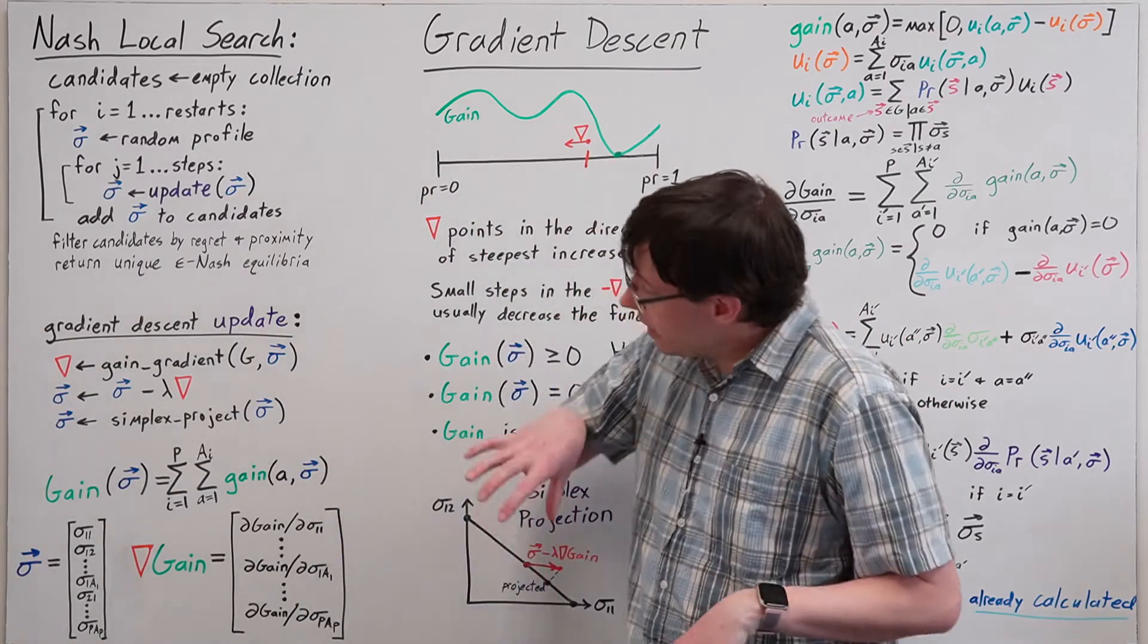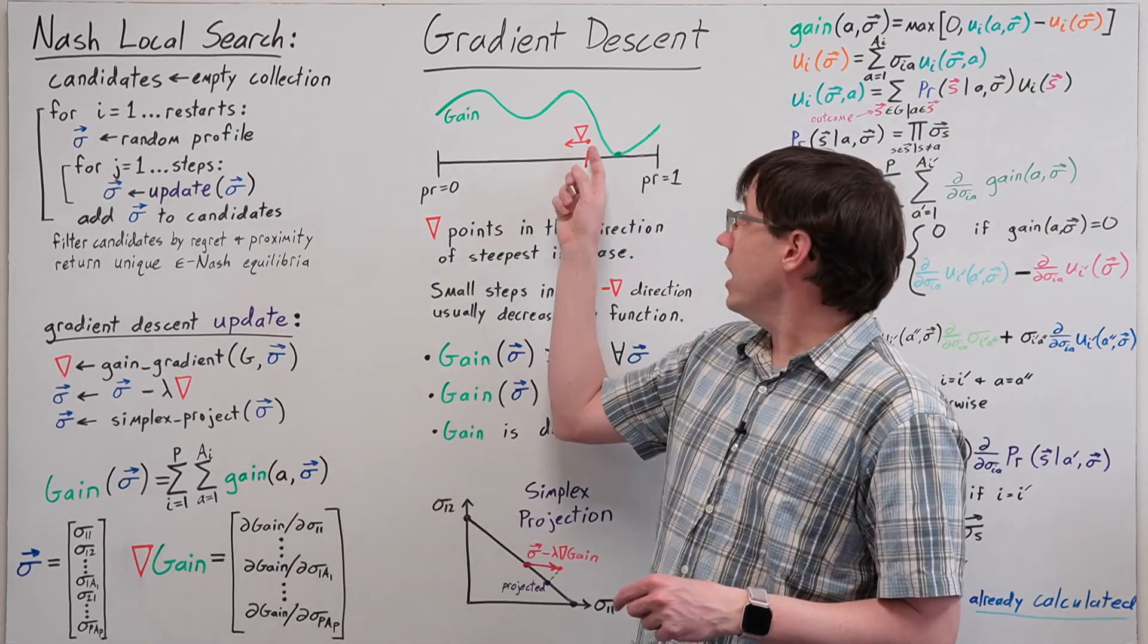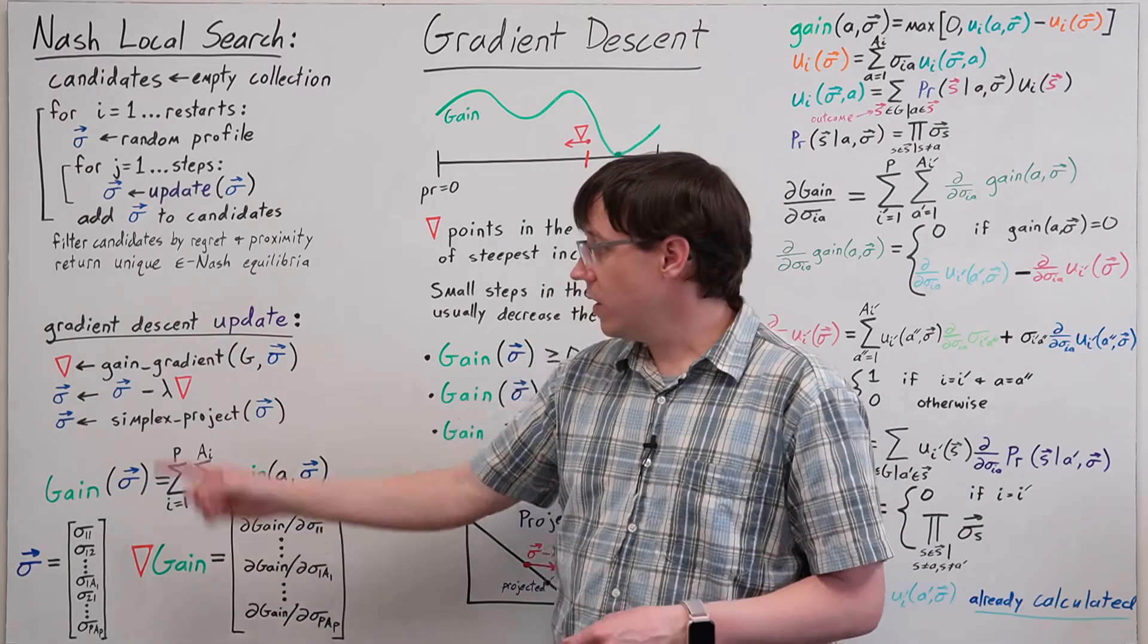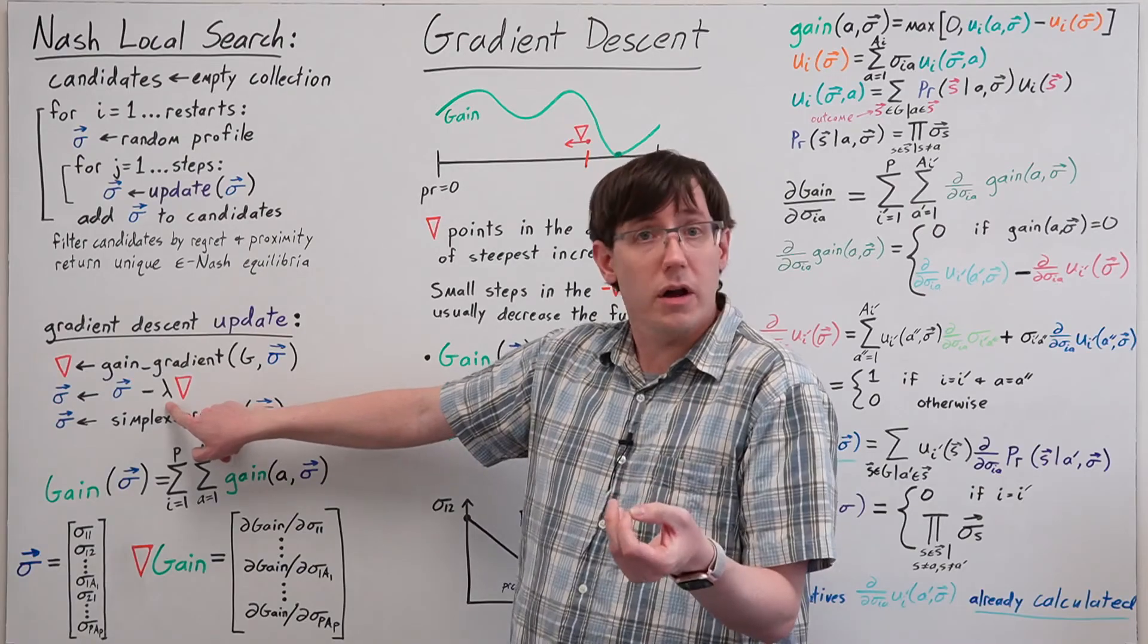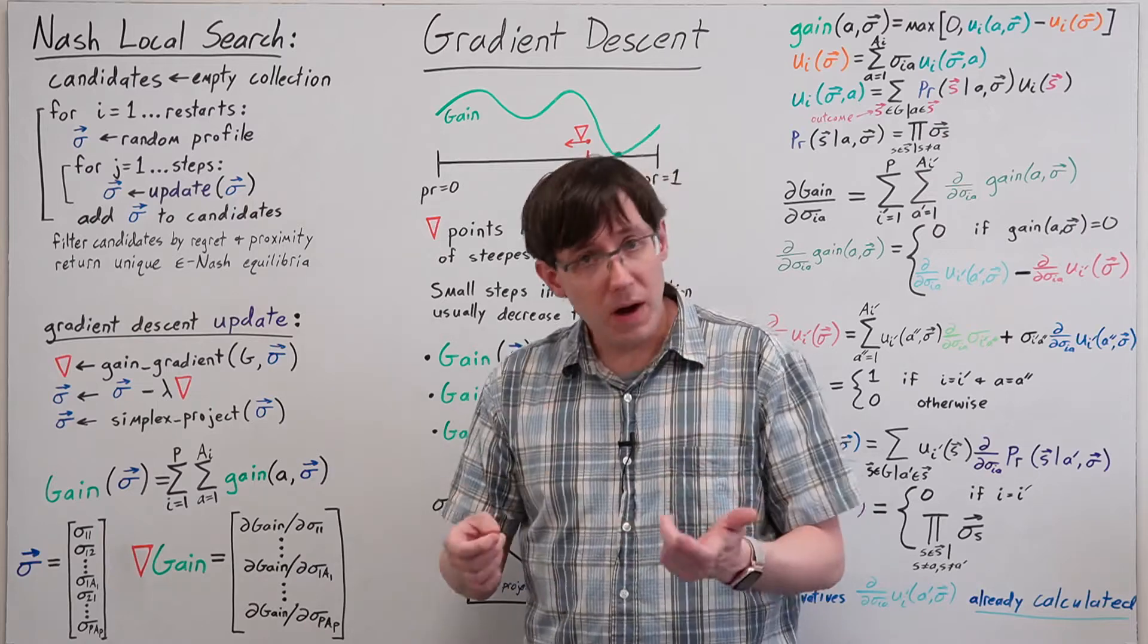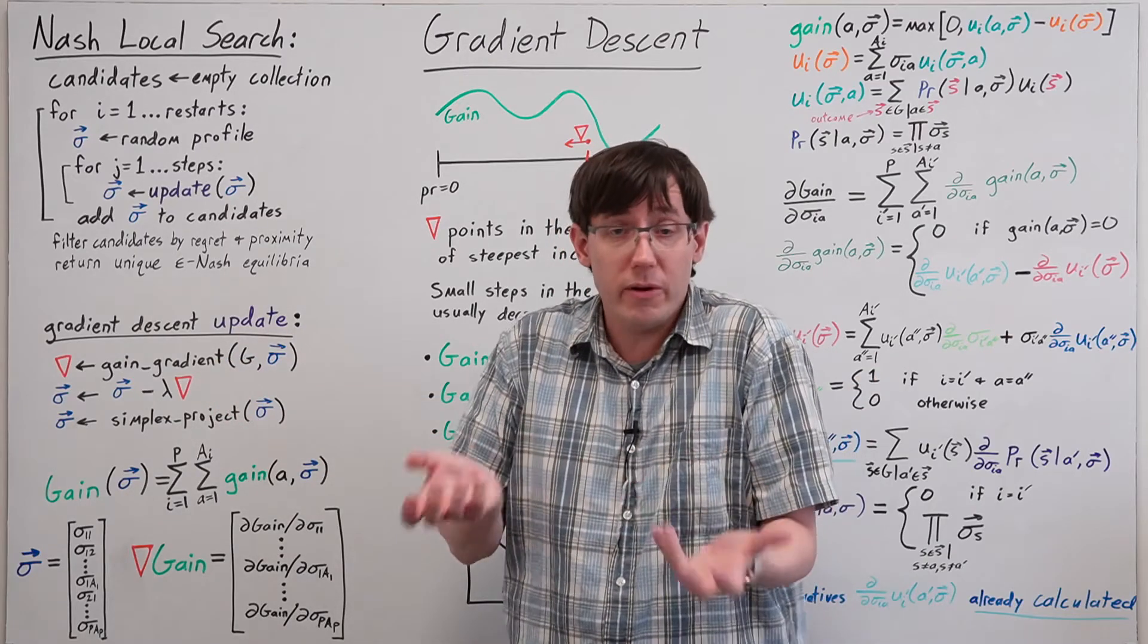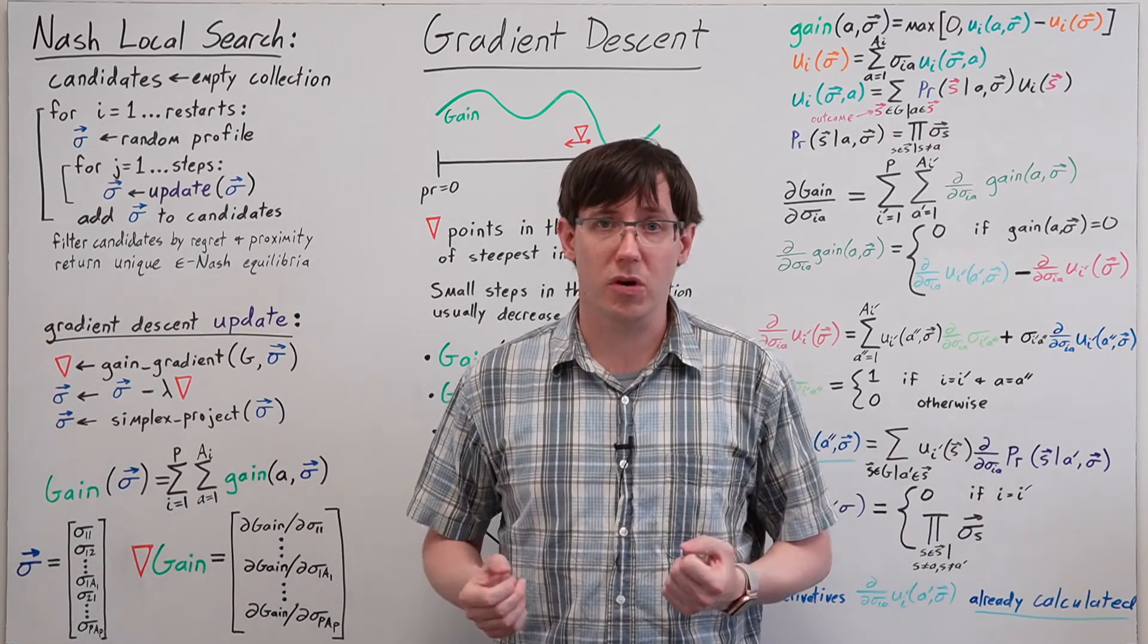If we can calculate the gradient of total gain, then we can take a step in the minus gradient direction by subtracting a multiple of this gradient vector from the profile vector. That multiple lambda controls how big of a step we'll be taking. But if we take a profile vector and subtract some other vector from it, there's no guarantee that the resulting vector is a valid mixed strategy profile.